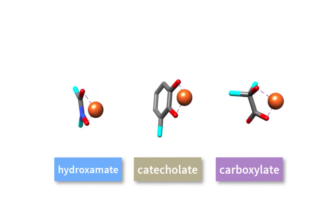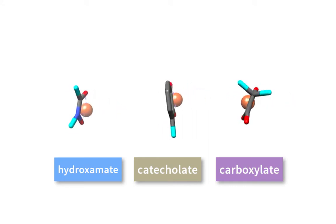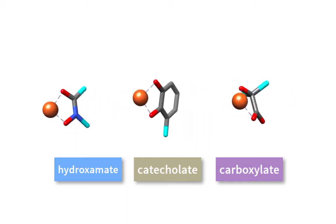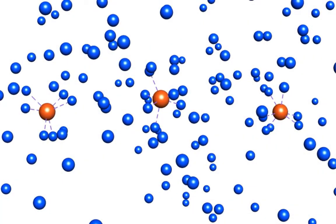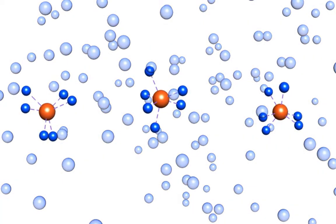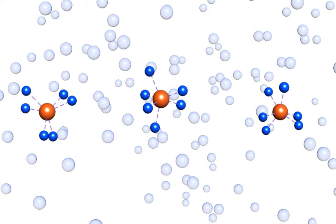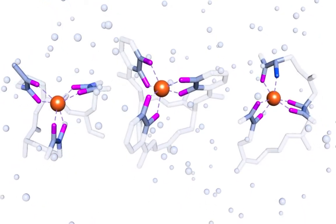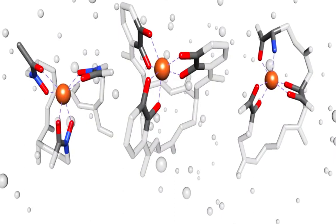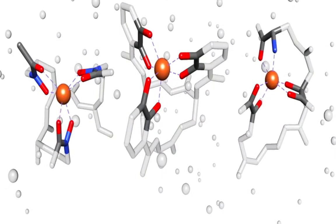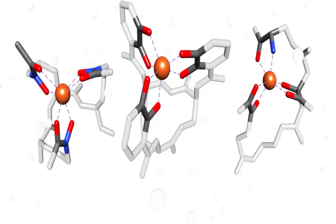Iron binding to hexadentate ligands is entropically favorable due to the chelate effect. Iron-3 is usually found in an aqueous solution, meaning it is naturally hexa-coordinated with water. To bind the iron, siderophores surround this complex in a hexadentate manner. The new iron-3 siderophore complex has an octahedral geometry with a high-spin D5 electron configuration.